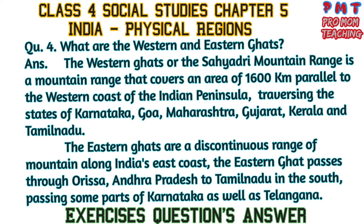Question number 4: What are the Western and Eastern Ghats? Answer: The Western Ghats, also known as the Sahyadri mountain range, cover an area of 1,600 km parallel to the western coast of the Indian peninsula, traversing the states of Karnataka, Goa, Maharashtra, Gujarat, Kerala, and Tamil Nadu.